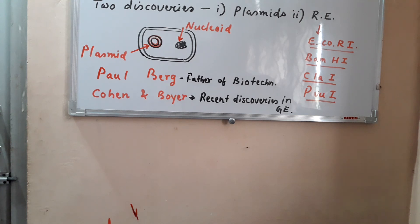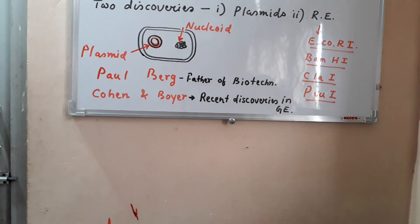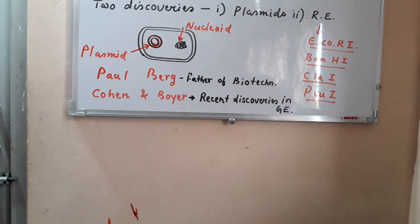PBR322 is a plasmid created by Bolivar and Roderick — it was not discovered but invented. Antibiotic resistance genes were introduced into it, along with restriction digestion sites, making it a fully modified artificial plasmid. Plasmids serve as vectors in genetic engineering experiments because they can be cut and inserted with new genes.